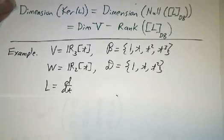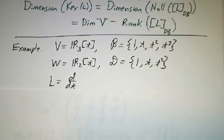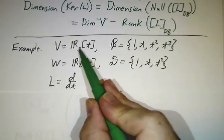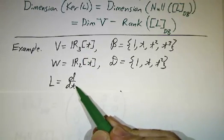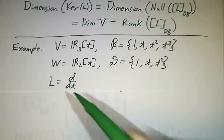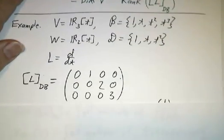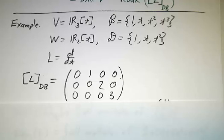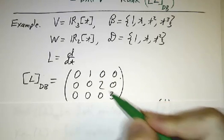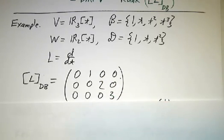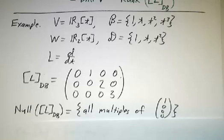So let's work an example. Let's look at the example we had before where V was cubic polynomials, W was quadratic polynomials, and L was the derivative. We already worked out the matrix for this linear transformation, and it's conveniently already in row echelon form. Reduced row echelon form, this 2 and 3 would just become 1.